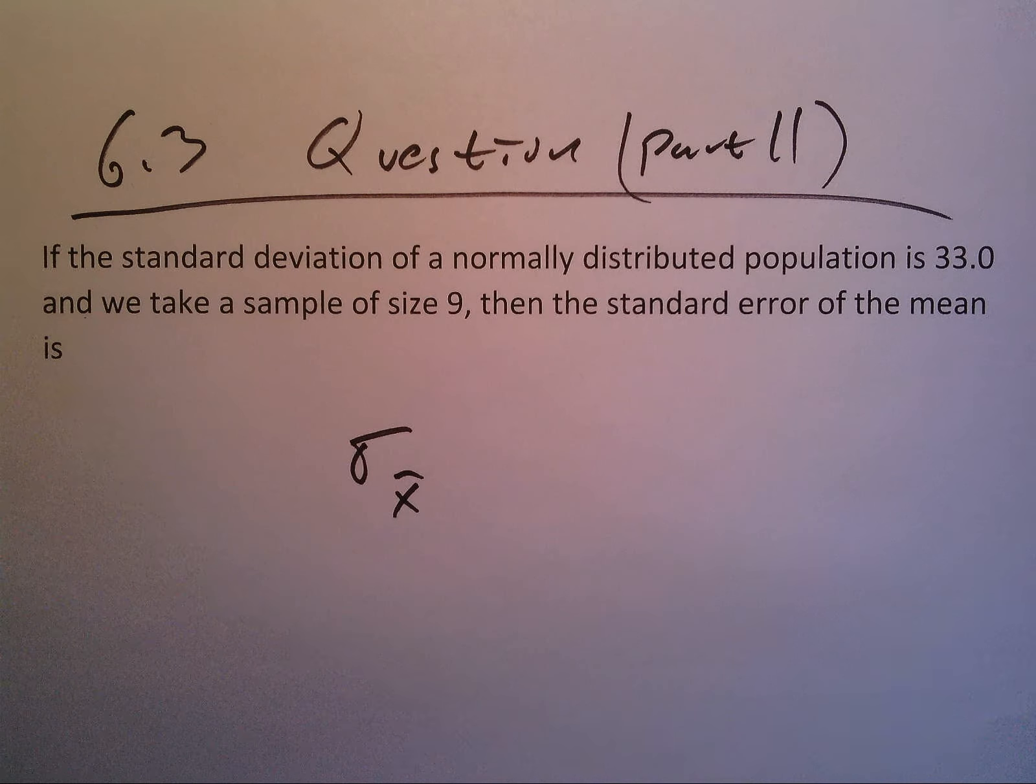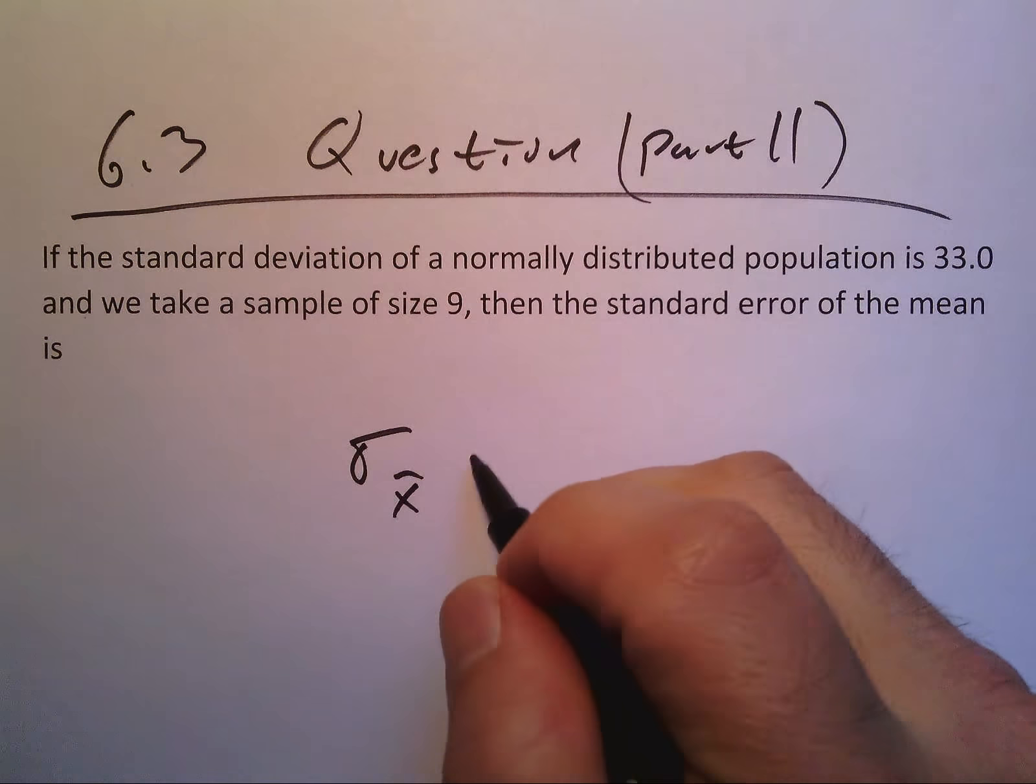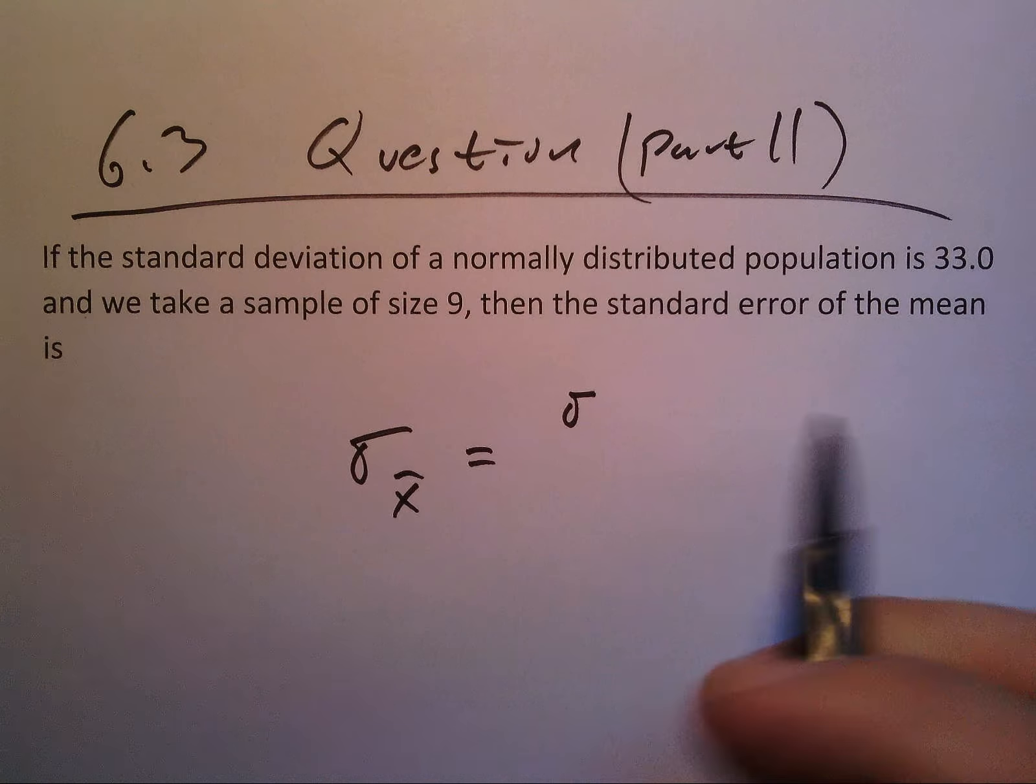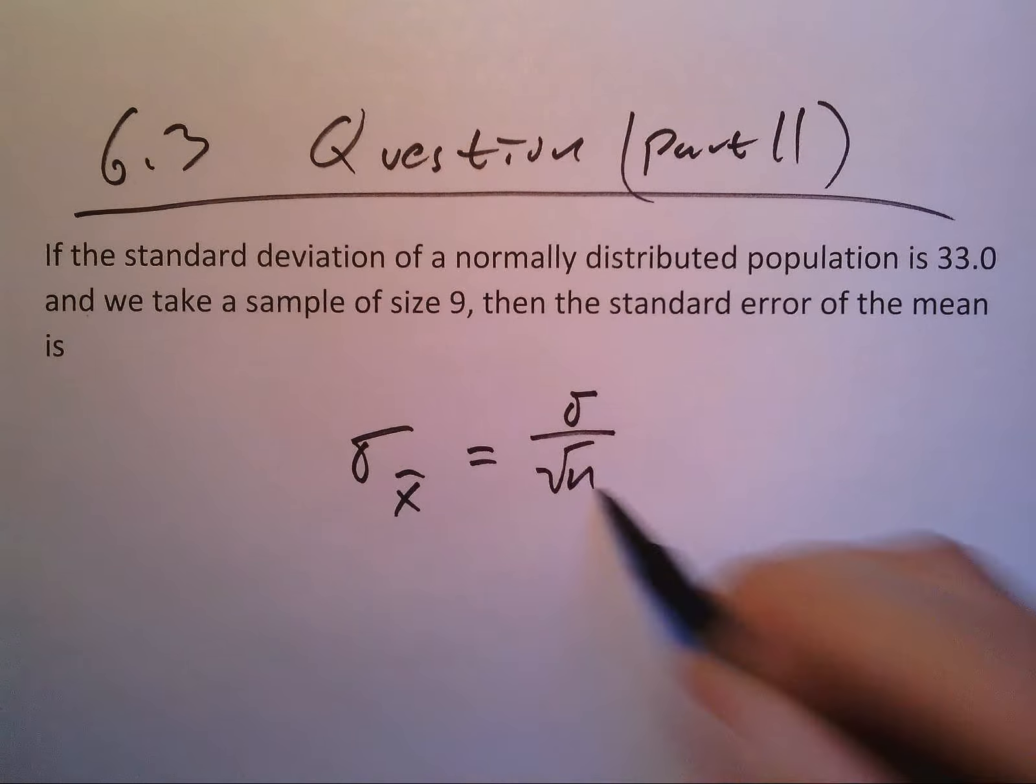We know that this is always going to be sigma, the population standard deviation, divided by the square root of n.